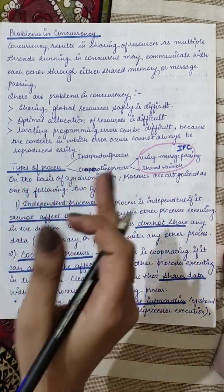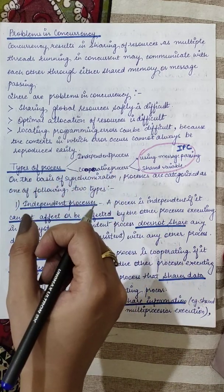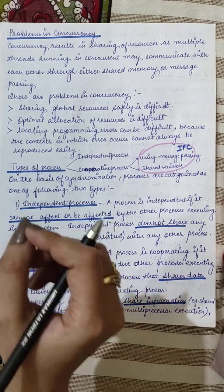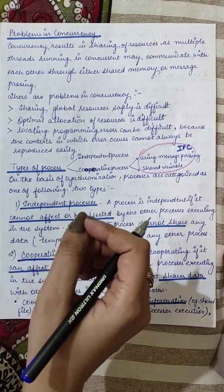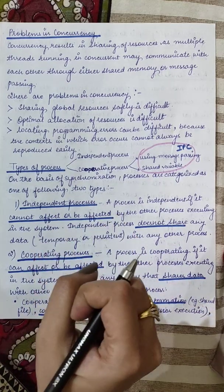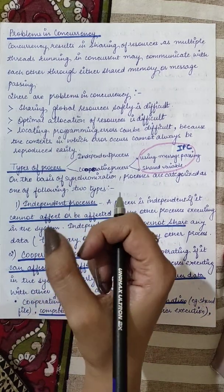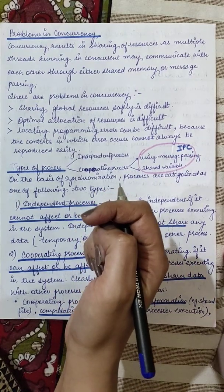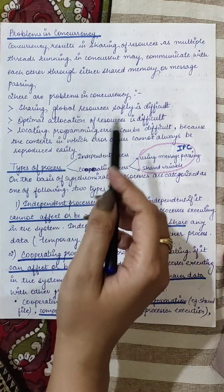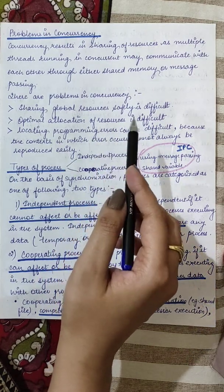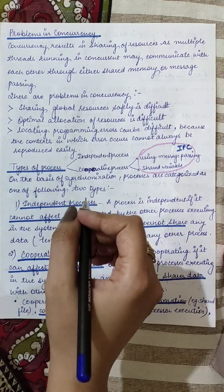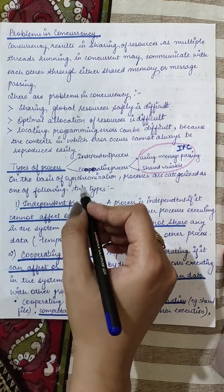Ki context switching bahut zyada fast tarike se hogi concurrency to hume yese achieve karte hai ki you are just jumping from one process to another process. Kyunki ek hi processor unit pe aap ek se zyada task karana chahte hai to aap kya karayenge - ek task thoda sa chalayenge phir dusre task pe jump karayenge, so this is context switching baar baar hooti rahegi. So ab jab baar baar hooti rahegi, to yeh find out karpana ki kis ne error create kiya it will be difficult. Uske baad yeh teeno ko hum deal karenge aage ke kis tarike se isko manage kiya jae ke concurrent processes bhi execute ho jayein and problems bhi na hoon.